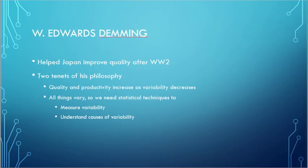Statistical process control is founded in work by Edward Deming, who helped Japan improve the quality of their manufacturing processes after World War II. There are basically two tenets to this philosophy. The first is that quality and productivity increase as variability decreases. But he also understood that everything varies — there's always some variation. So we need a set of statistical techniques that allow us not only to measure that variability, but also to understand the causes of it.